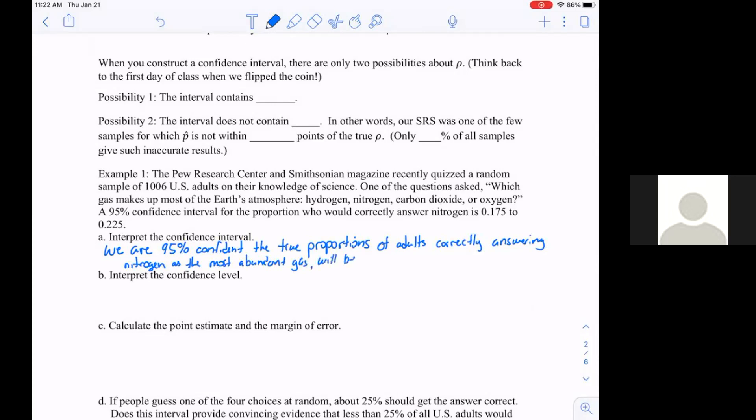As the most abundant gas will be between 17.5 percent and 22.5 percent. That's just something we're starting to get down. It has the three things I'm looking for: 95 percent confident, we have context, and we have the interval.